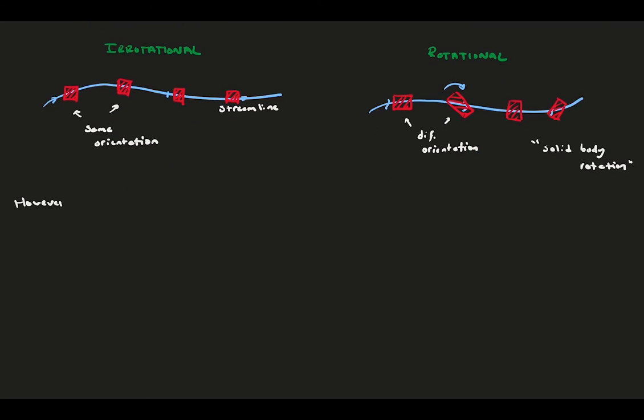However, fluids get much more complicated than solids, because they can distort when under a shear stress. Consider a third case, with the same streamline. Now, as the fluid element, our box moves along the streamline, and it deforms in an odd way. Here, it isn't so clear if the orientation of the box is changing, because we typically think of it in terms of solid motion, instead of our fluid motion.